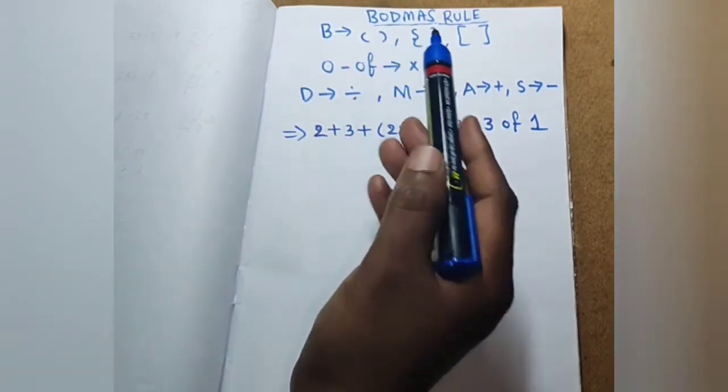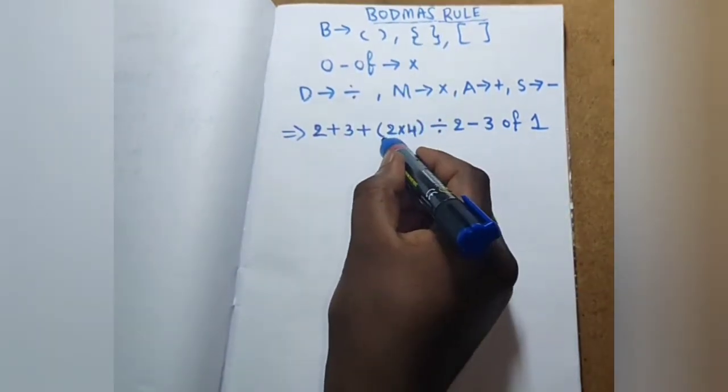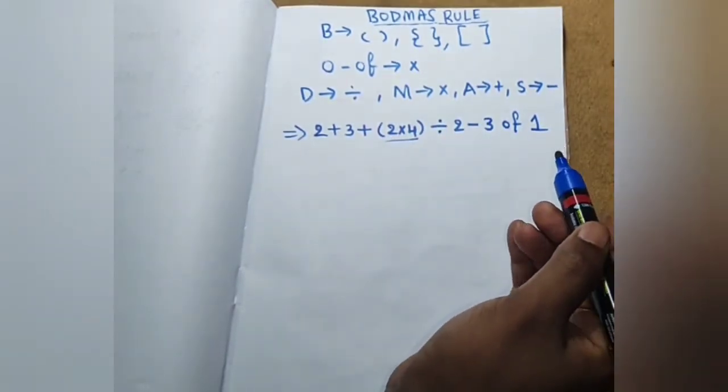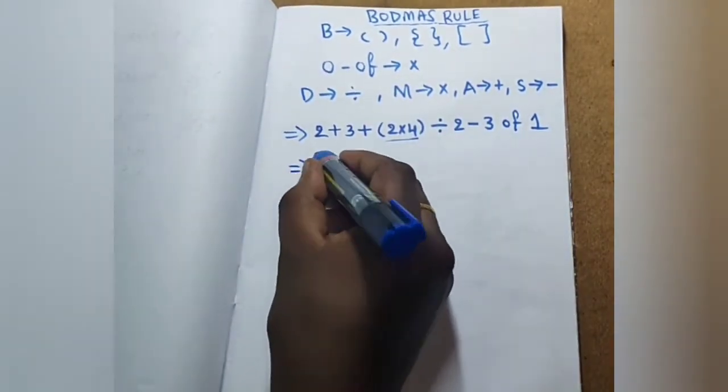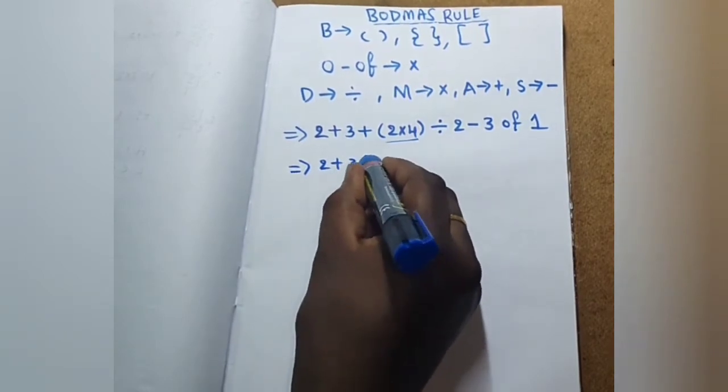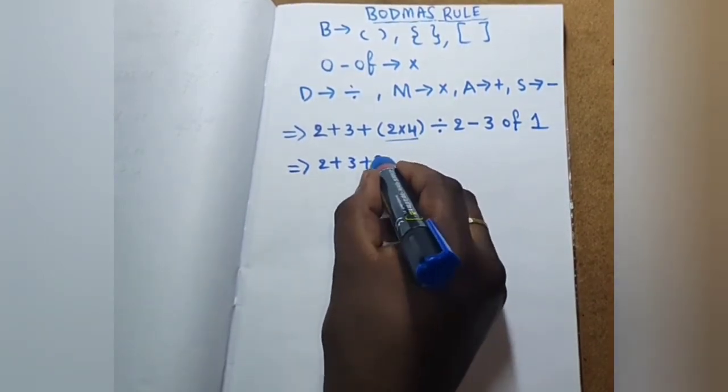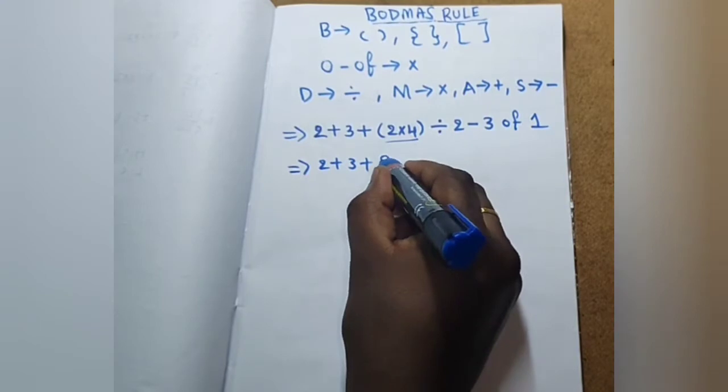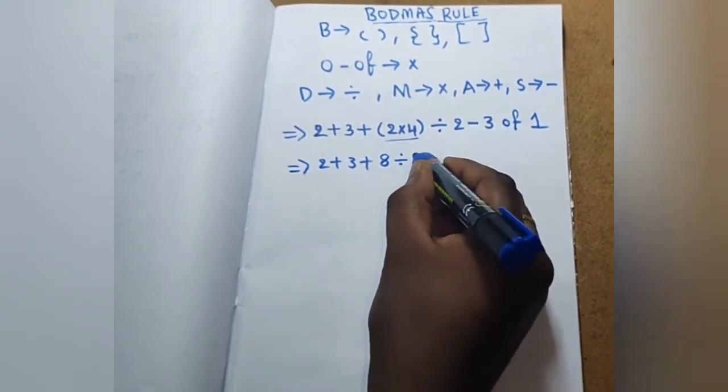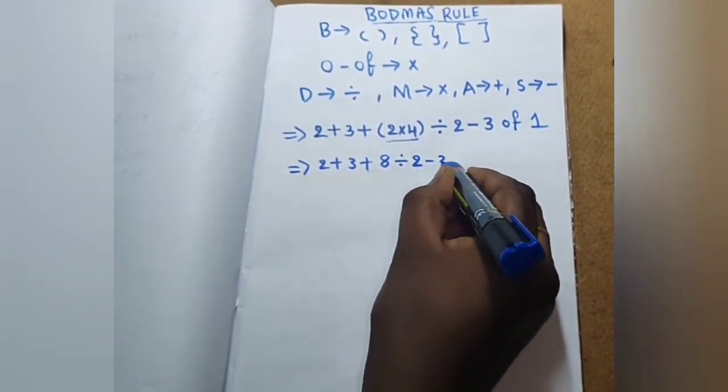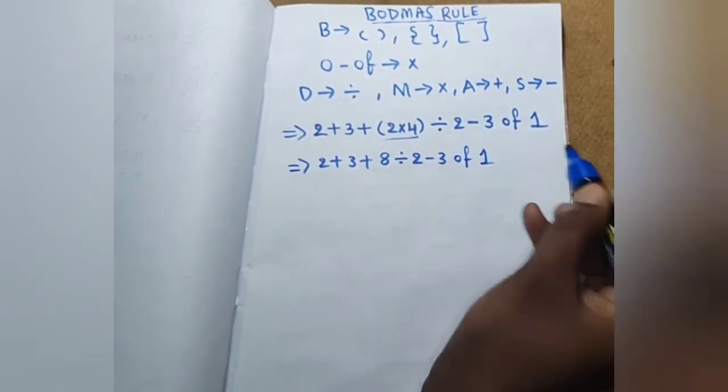What is calculation? Brackets save one. 2 into 4. This bracket is open brackets. 2 plus 3 plus 2 into 4 value 8 divided by 2 minus 3 of 1.